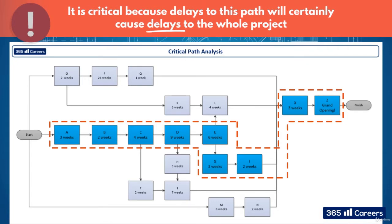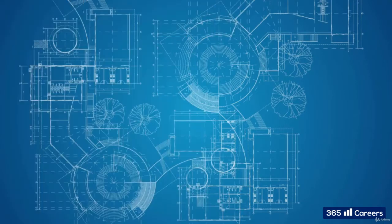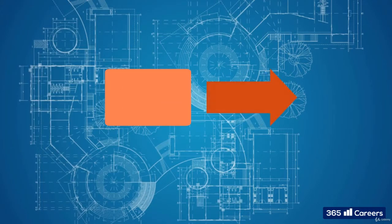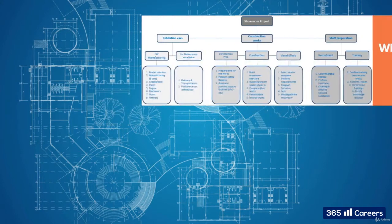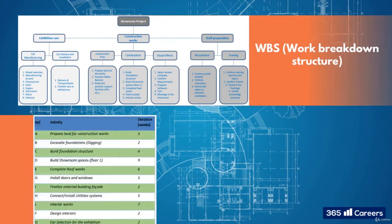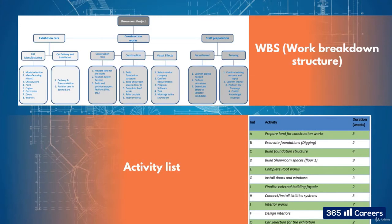One of the best ways to plot the Critical Path is to put the information in a network chart with boxes and arrows. This works well because it shows all the tasks and all the durations in the boxes and all dependencies, making it as easy as pi to chart a critical path. Using our work breakdown structure and activity list, let's begin.